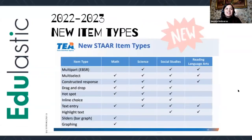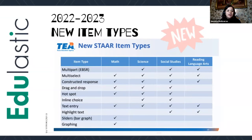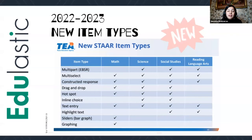So why is Edulastic so amazing, especially for Texas? In 2022-2023, new item types are going to be coming up in our STAAR exams because it's going to be online. For math, it will have multi-select, constructed response, drag and drop, hotspot, text entry, sliders, and graphing. This is very important to consider because Edulastic offers not only these options but many more that can totally train your students on how to be exposed to those item types.